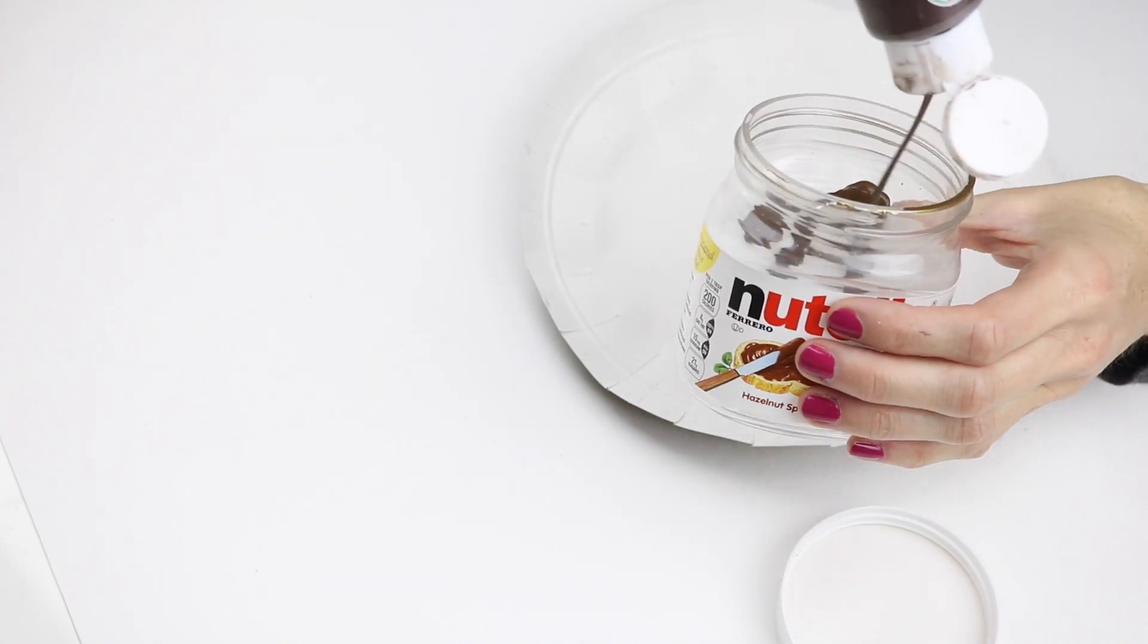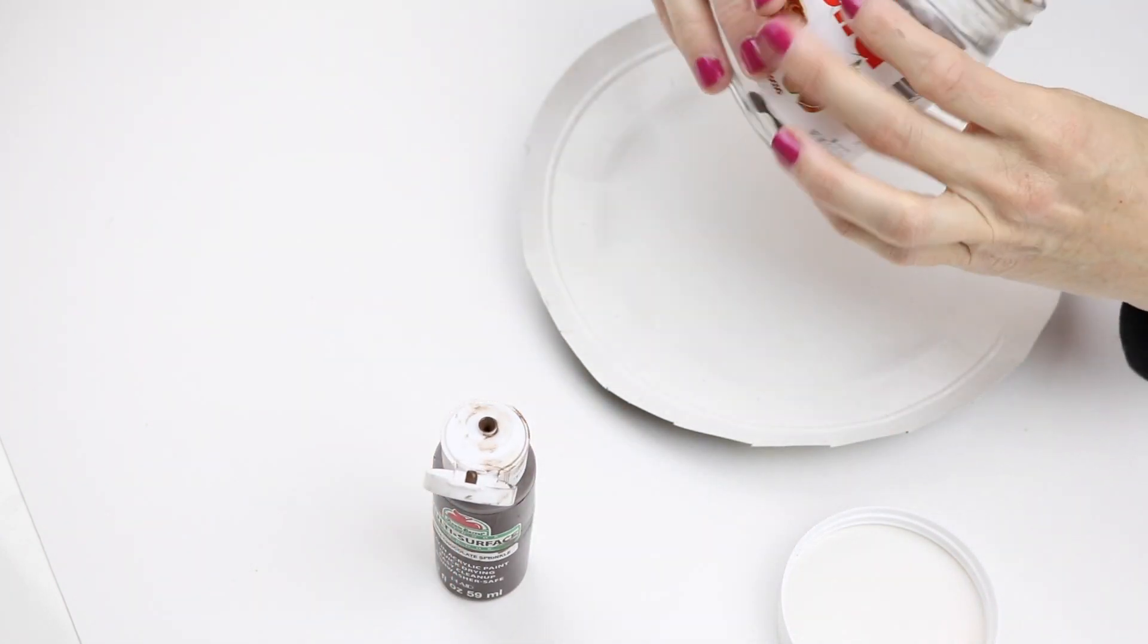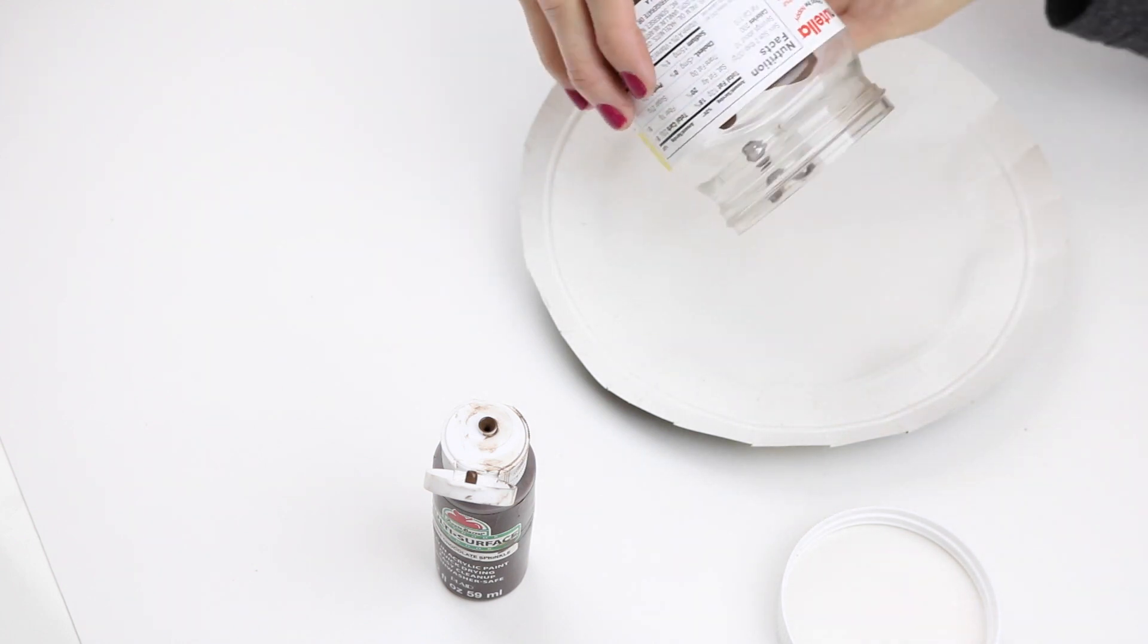You'll just start by putting some paint into the container and then swirling it around until it reaches the top.